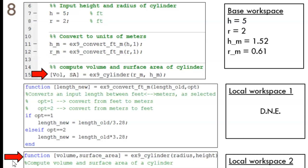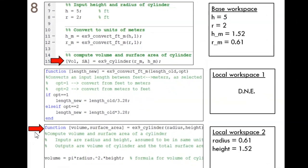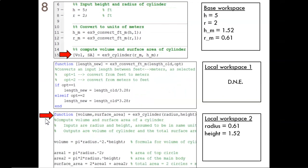Moving down in the script, we now call the cylinder function. In its workspace, variables radius and height are created from copying rm and hm.